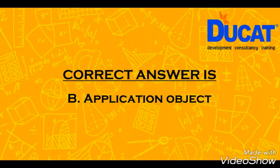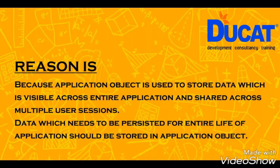The correct answer is B. The Application object is used to store data which is visible across the entire application and shared across multiple user sessions. Data which needs to be persisted for the entire life of the application should be stored in the Application object.